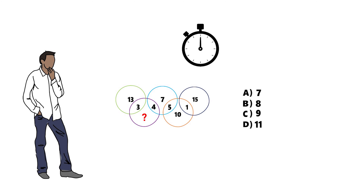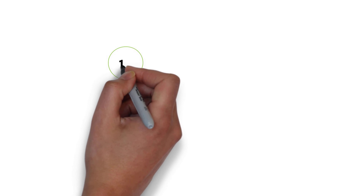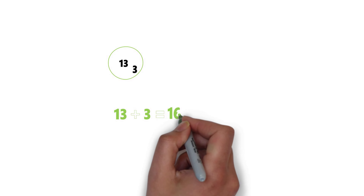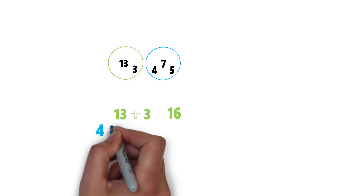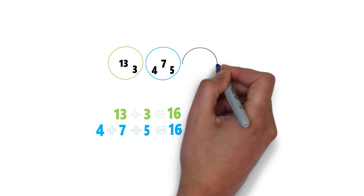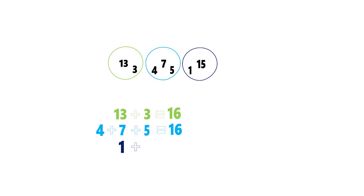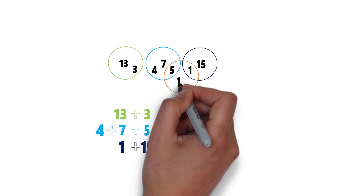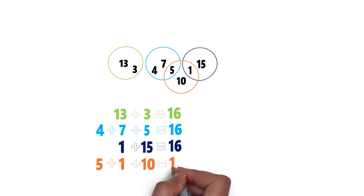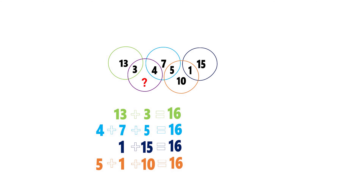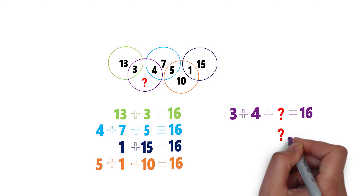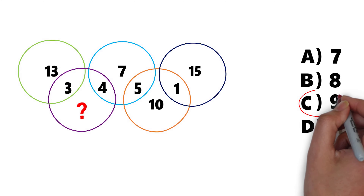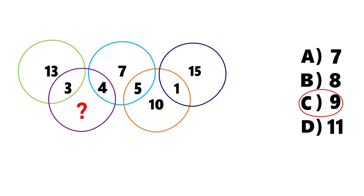As you might have figured out, the sum of each circle's numbers adds up to 16. In the green circle: 13 plus 3 equals 16. In the blue circle: 4 plus 7 plus 5 equals 16. In the black circle: 1 plus 15 equals 16. In the orange circle: 5 plus 1 plus 10 equals 16. To find the missing number, solve: 3 plus 4 plus question mark equals 16. The missing number is 9. The correct choice is C.